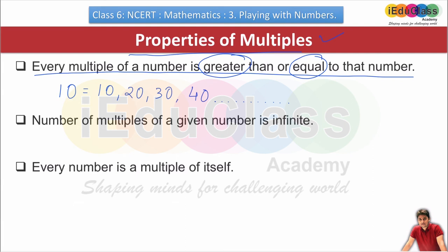Never can any multiple of any number be smaller than that number. Keep this in your mind. Next: number of multiples of given numbers is infinite. Number of multiples are unlimited. Like we saw here, for example, for 6. If you multiply 6 with thousands of numbers, you will get thousands of multiples. If you multiply with lakhs of numbers, you will get lakhs of multiples. Here, multiples never end.